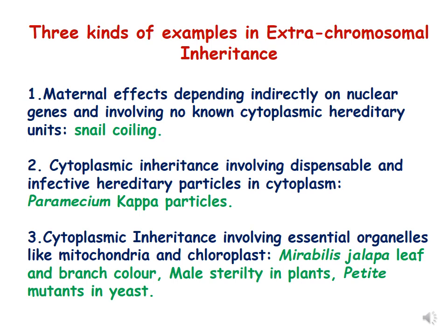There are three kinds of extrachromosomal inheritance. The first example is maternal effects depending directly on nuclear genes and involving no known cytoplasmic hereditary units. In this category we will learn the example of snail coiling, where the maternal effect is because of the nuclear genes.